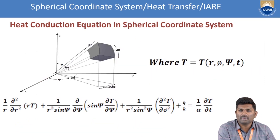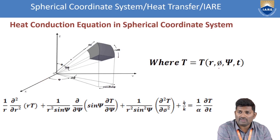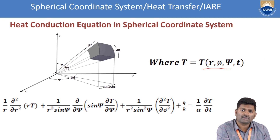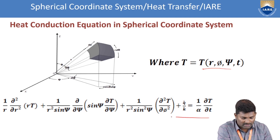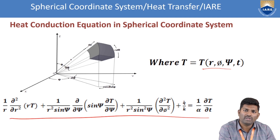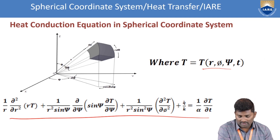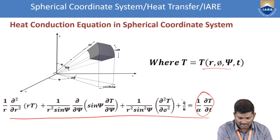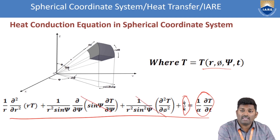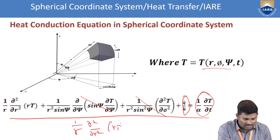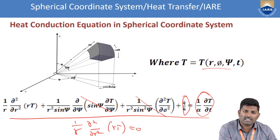For the spherical coordinate system, temperature is a function of radius, angles, and time. After applying the energy balance equation, you get the final spherical coordinate heat conduction equation. Special forms include steady state (time term = 0), no heat source (q-dot = 0), and radial-only direction where phi and psi terms are zero. Along only the radial direction with steady state and no heat source, you get (1/r) ∂²(rT)/∂r² = 0.